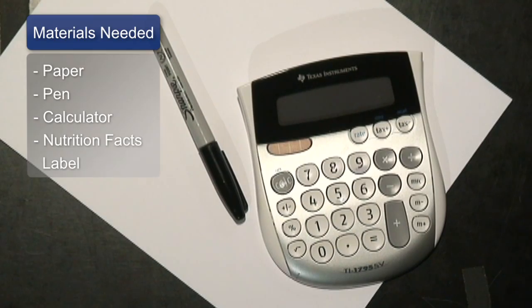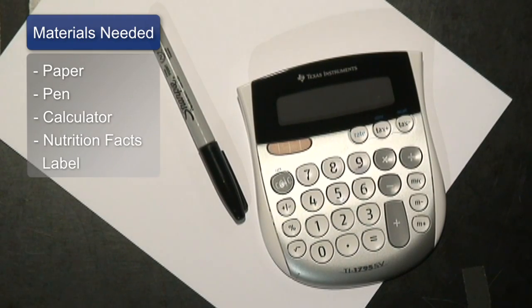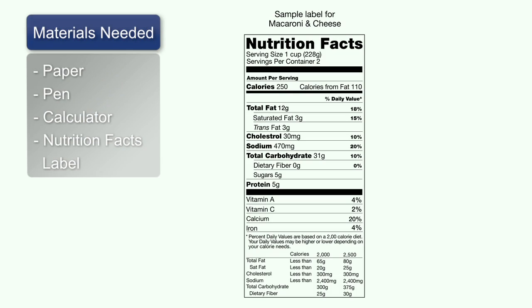A few things you'll need to help this process go a little bit smoother are a pen, some paper, a calculator, and definitely a nutrition facts label. The nutrition facts label is your key to guiding your nutrition — even when you're out at the restaurant, you can ask for it there, or when you're grocery shopping.